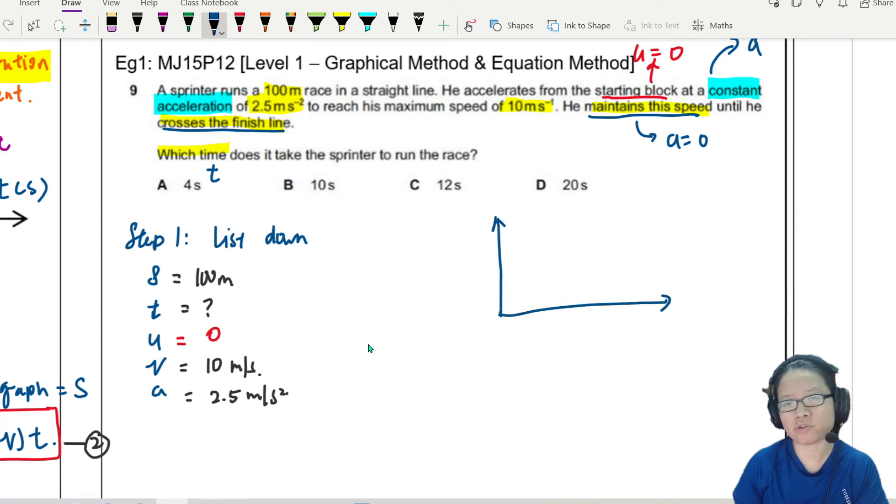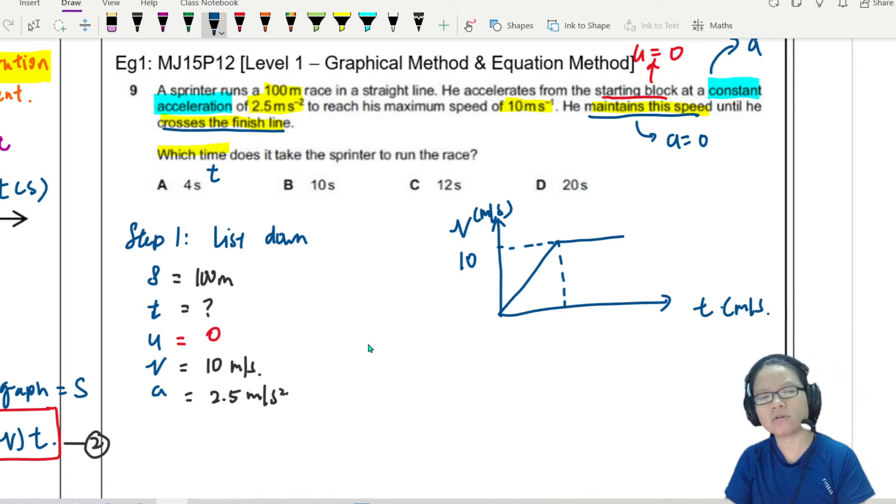So maybe you can draw a VT graph like this. So our friend is going to accelerate at the acceleration of 2.5 meter per second squared. Until the speed is 10 meter per second, and it will maintain 10 all the way. Teacher, this means the list got problem. Correct.